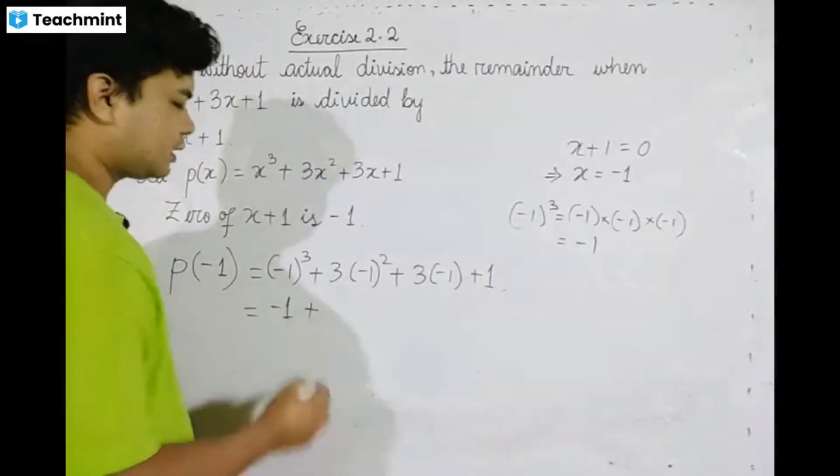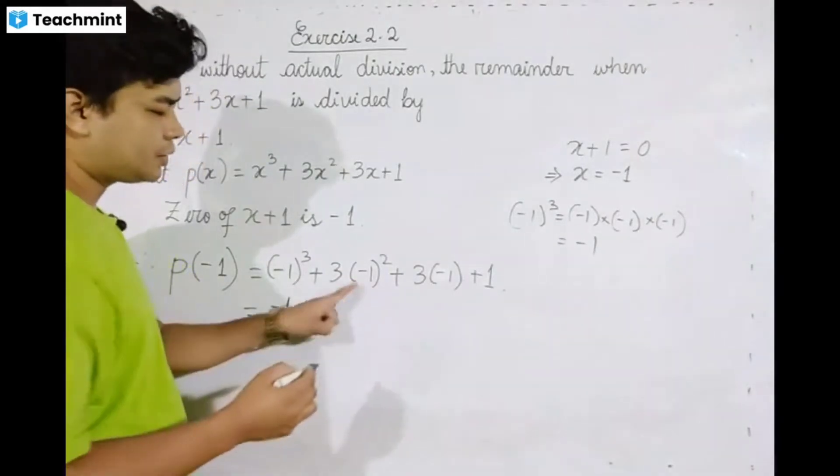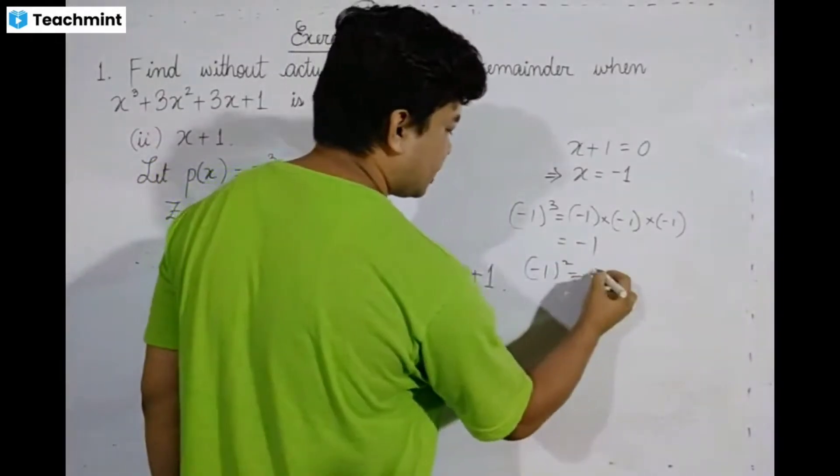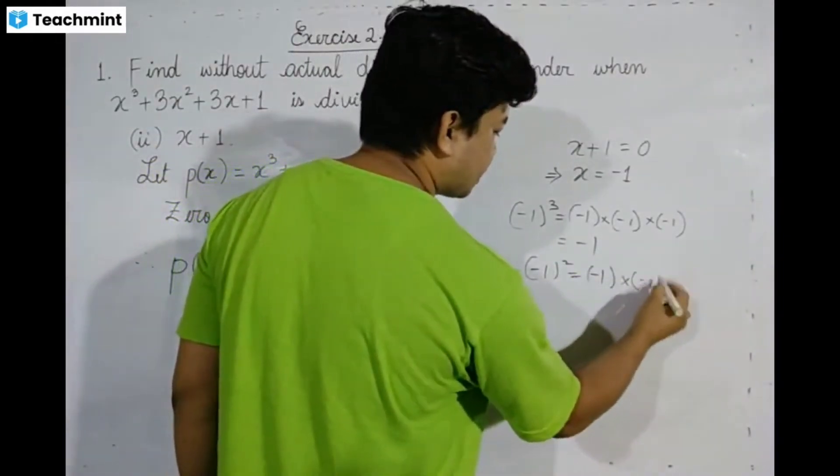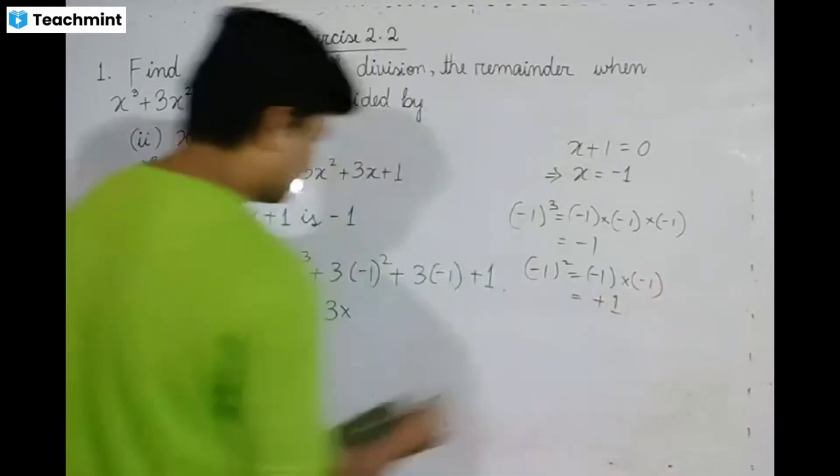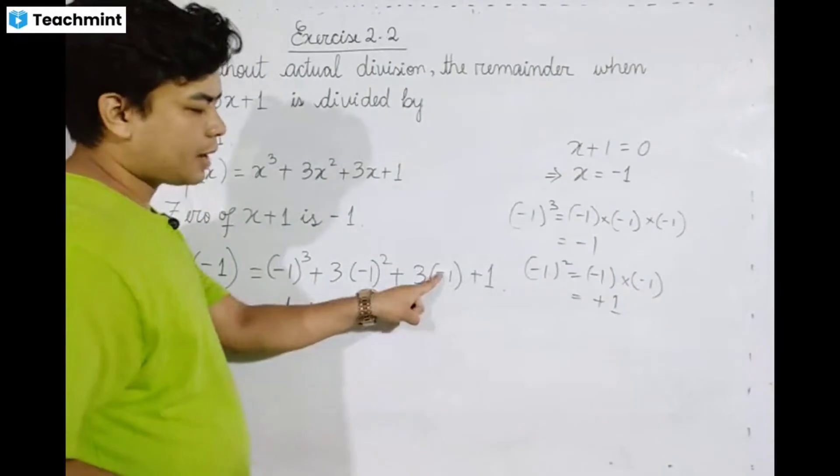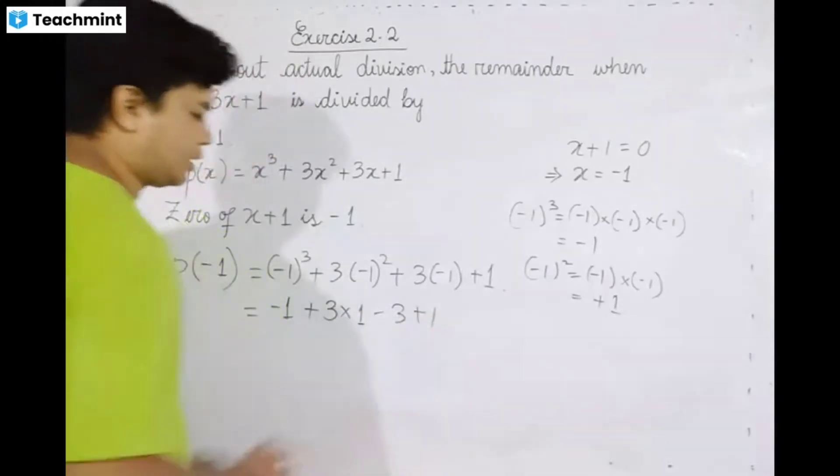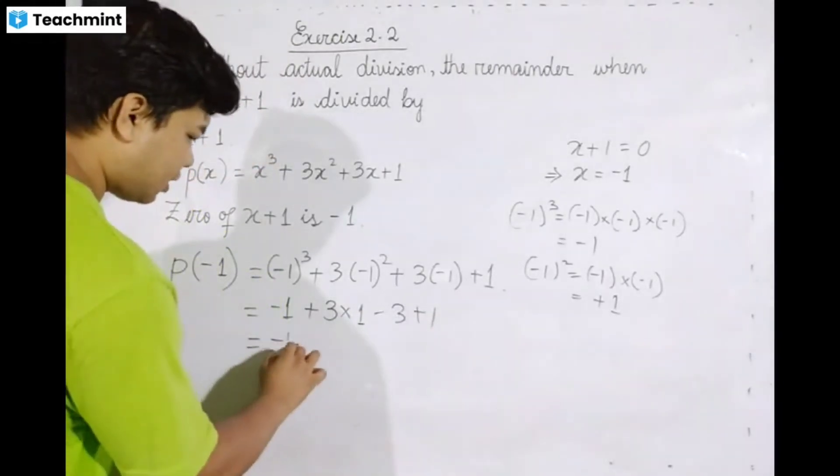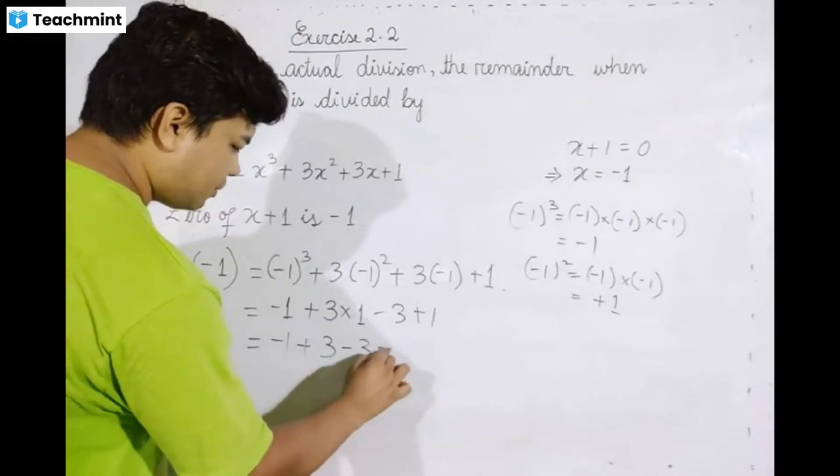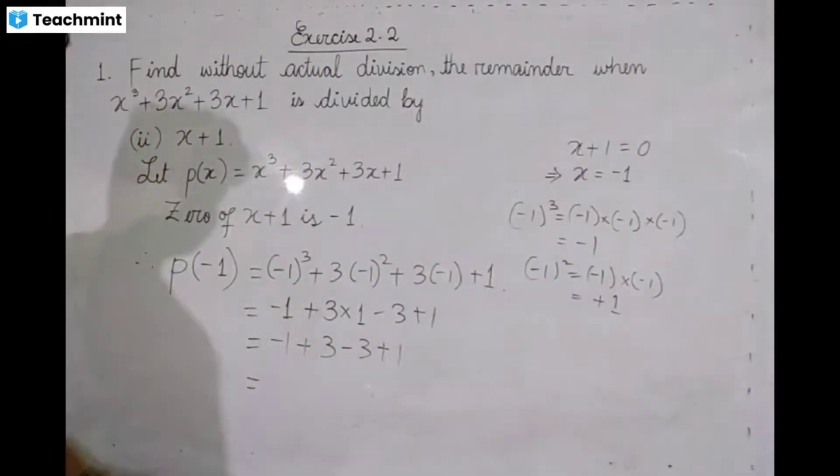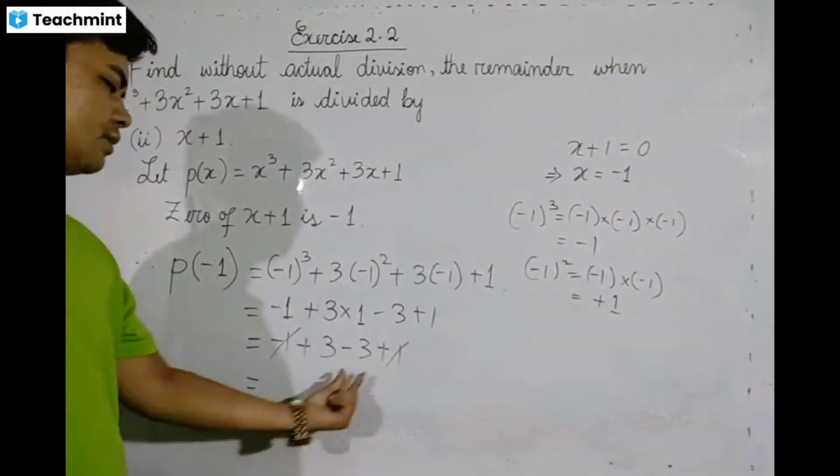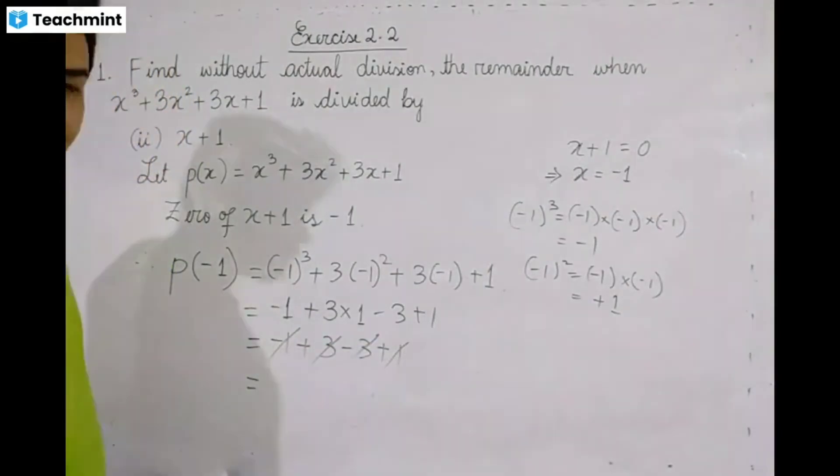Next, 3(-1)² = 3(1) = 3, and 3(-1) = -3. Now adding all terms: -1 + 3 - 3 + 1.